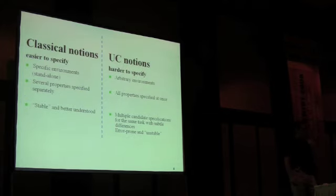So here's the comparison between these classical notions and the UC notions. The classical notions are typically easier to specify because for very constrained specific environments you would do that definition for each primitive at a time, and they are stable and relatively easy and quite well understood.